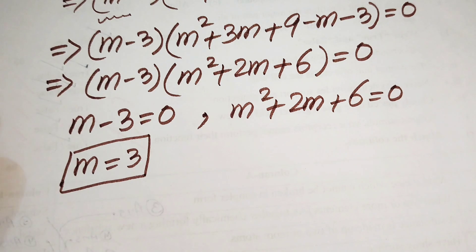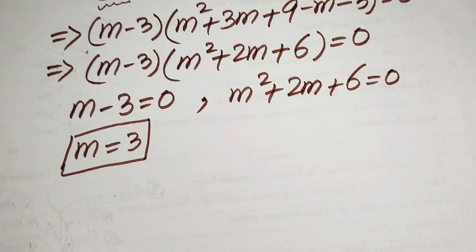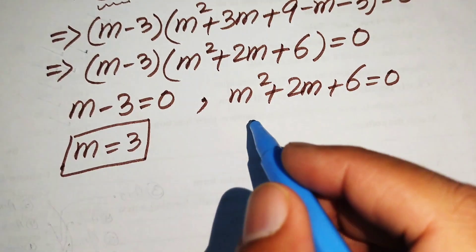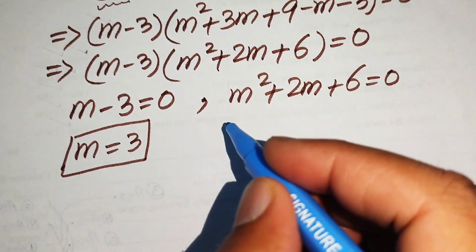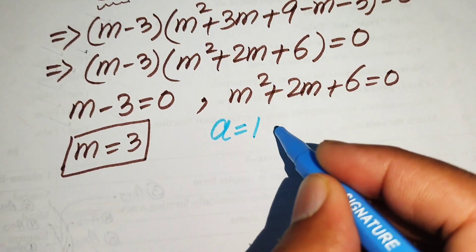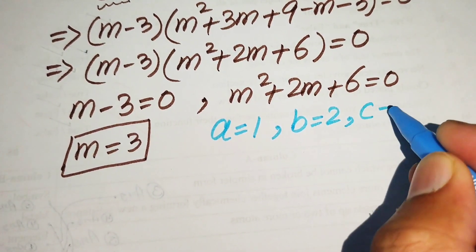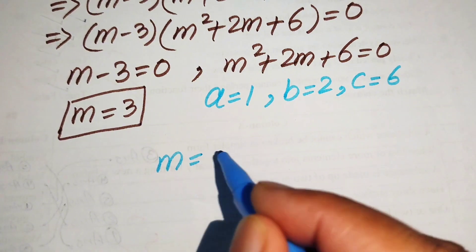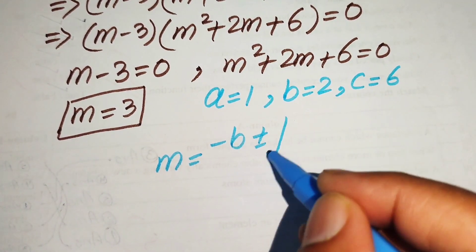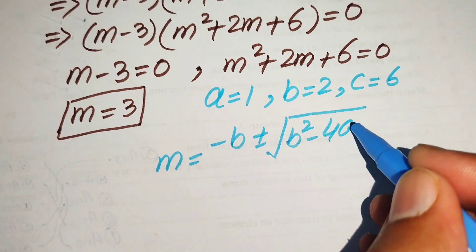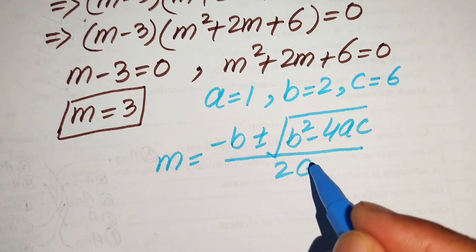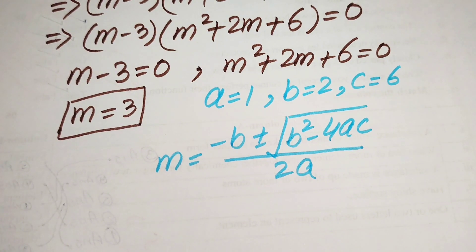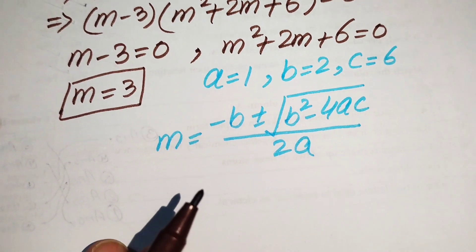To find the other two solutions we solve the quadratic equation m squared plus 2m plus 6 equals 0 using the quadratic formula. The coefficients are a equals 1, b equals 2, and c equals 6. The quadratic formula is m equals minus b plus or minus square root of b squared minus 4ac, all divided by 2a.